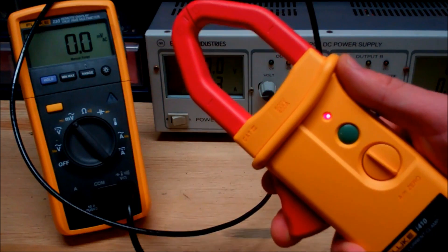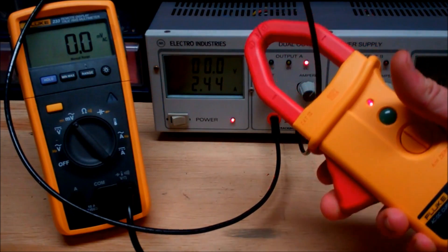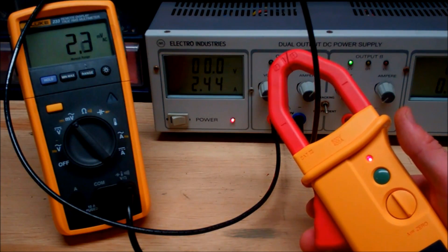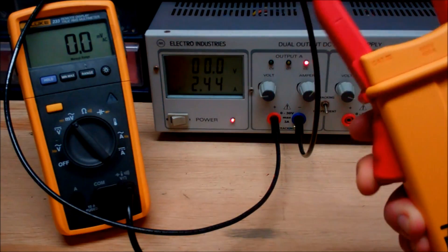One great feature about a clamp meter attachment for your multimeter is you can just go like this and take a reading. What that means is that you're able to quickly observe what's going on with the circuit and you don't need to shut down the circuit in order to see what's occurring.